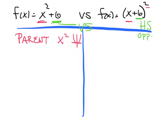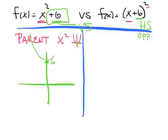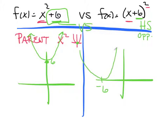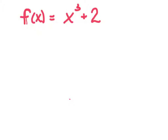Let's talk about f of x equals x squared plus 6 versus f of x equals the quantity x plus 6 squared. These do very different things — the parent function is x squared in both cases. For x squared plus 6, the 6 is outside, so this is a vertical shift up 6 — just a parabola facing upward shifted up 6. For the quantity x plus 6 squared, the 6 is inside parentheses, so this is a horizontal shift — and because I see positive 6, I'm actually shifting it to the left 6.